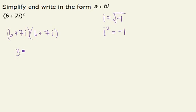Foiling, I receive 36 plus 42i plus 42i plus 49i squared.